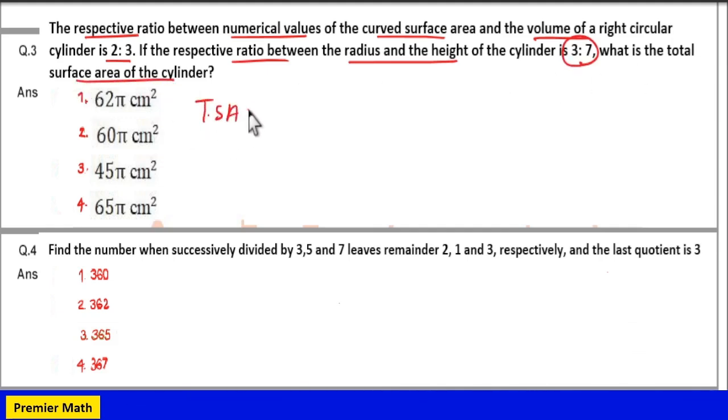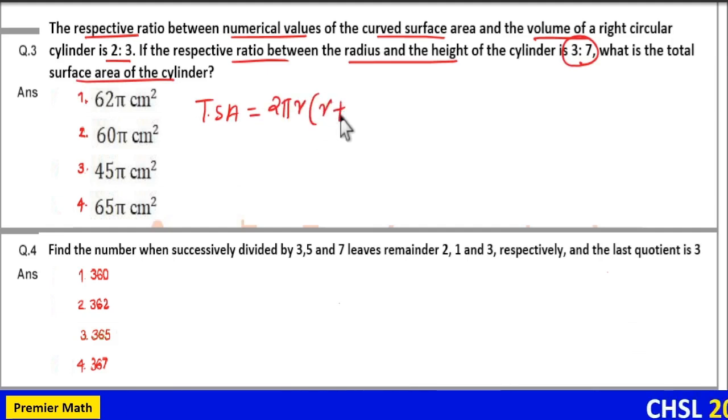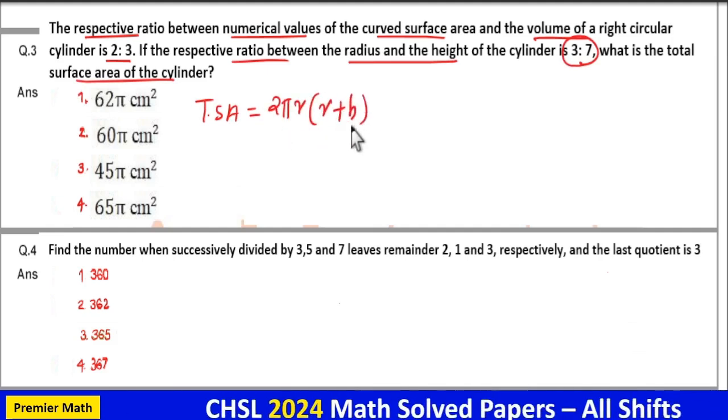The total surface area of a cylinder is 2πr² plus 2πrh. So, 2πr(r + h).